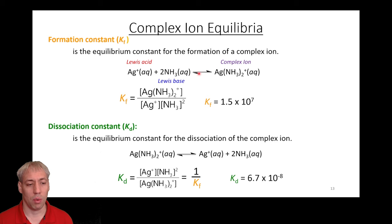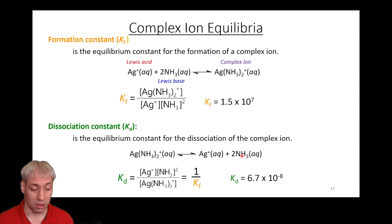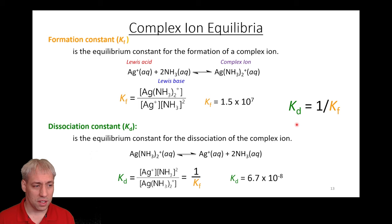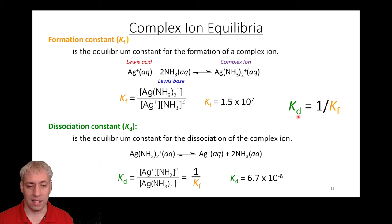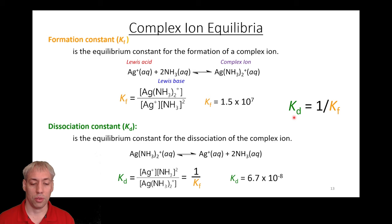Why use Kf over Kd when they represent essentially the same thing? It depends on what you want to discuss. If you want to form a complex ion, it's more convenient to talk about Kf — the bigger the number, the better. If you have a complex ion in solution and want to know if it will release one of its species — say in a drug delivery mechanism where a ligand is useful somewhere in the body — you might prefer to use Kd. Kf and Kd are just subscripts indicating which direction the equilibrium equation is written. All the rules from chapter 13 still hold: large K vs small K, flipping equilibria, multiplying equilibria together.